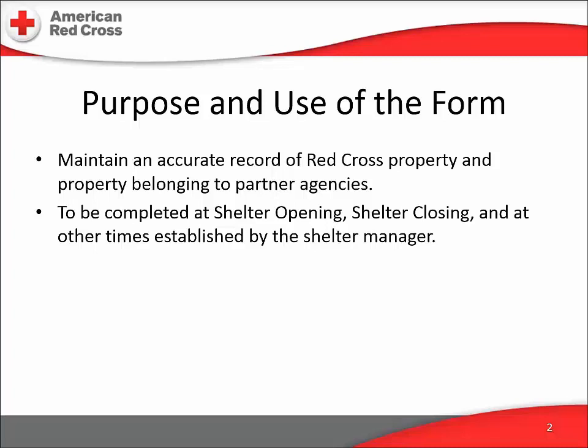When a shelter is opened, that operation is jump-started with everything needed for the anticipated population — everything from cots and blankets to clipboards and pencils and coffee pots. Multiply that inventory by the dozens of shelters we open during a level 7 operation, the largest that we do, and we're talking about real money. It is the responsibility of the shelter manager and the Red Cross staffers to keep track of that inventory, and the shelter inventory form is the main tool for that task.